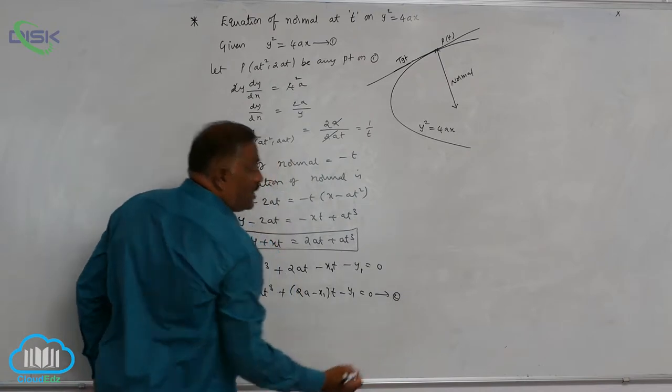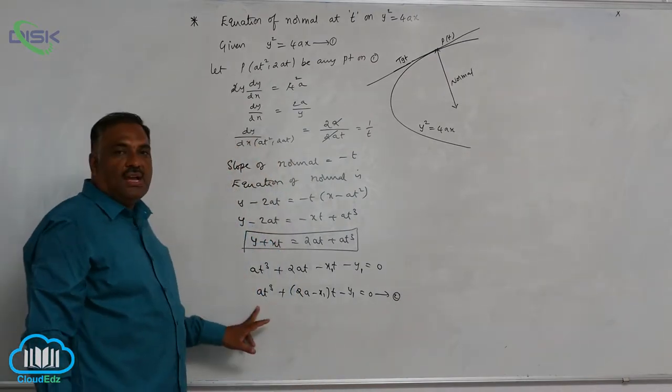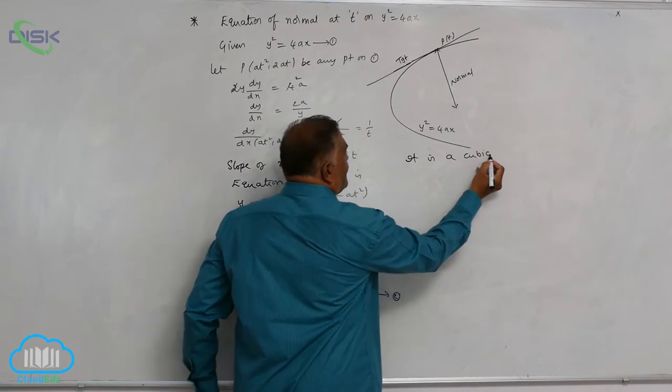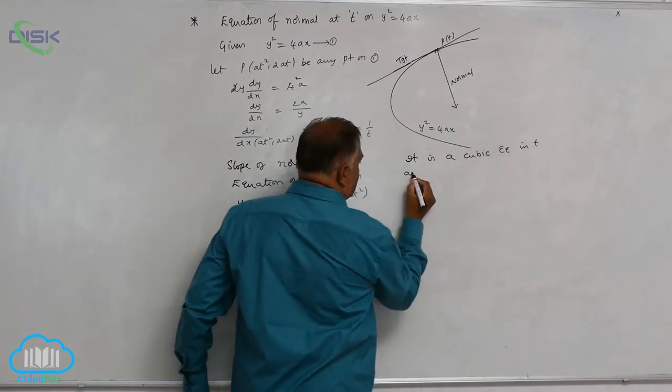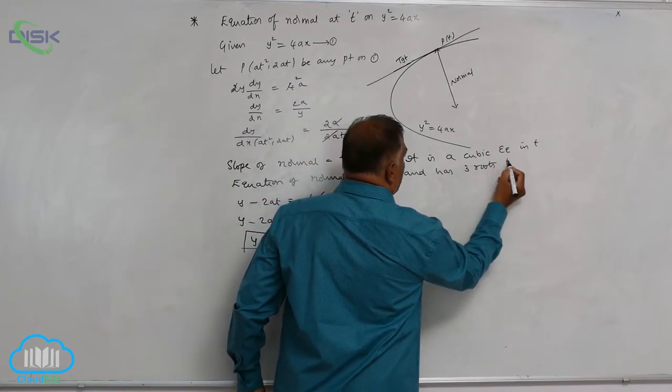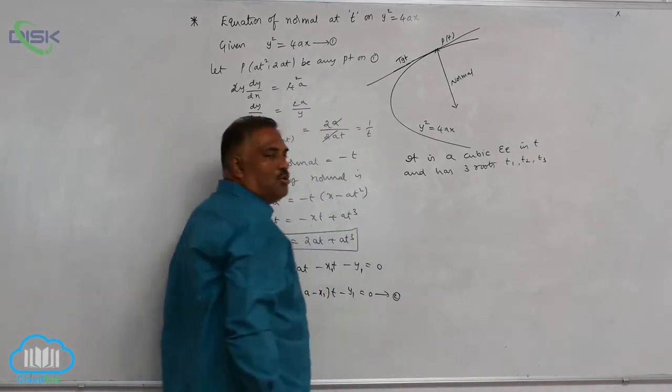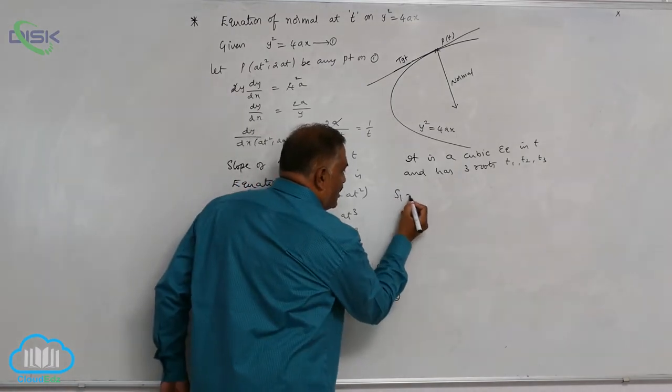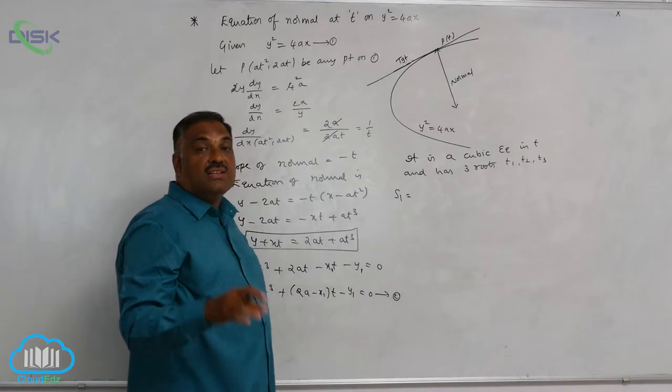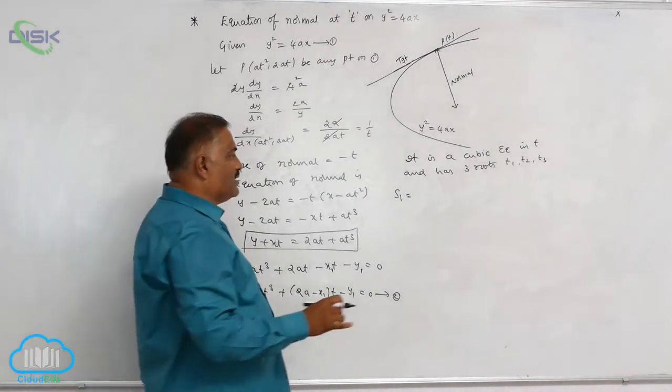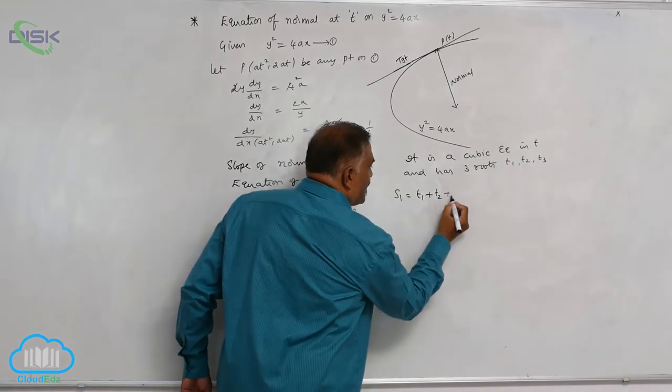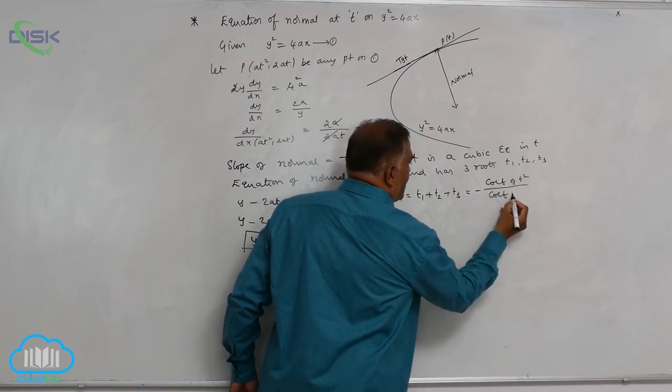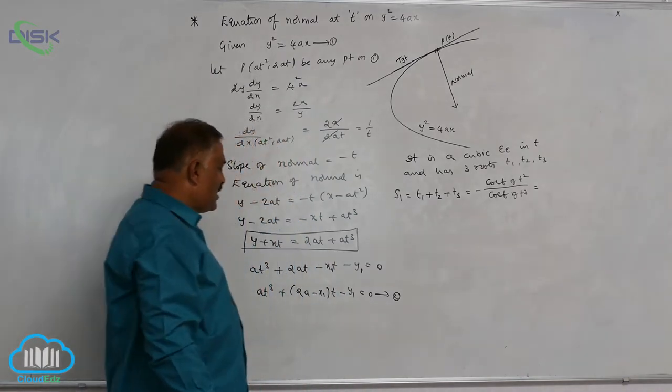Call it equation number 2. Now we see that it is purely a cubic equation in terms of t. It is a cubic equation in t and has three roots t1 comma t2 comma t3. Now we know that s1, all of you know that s1.